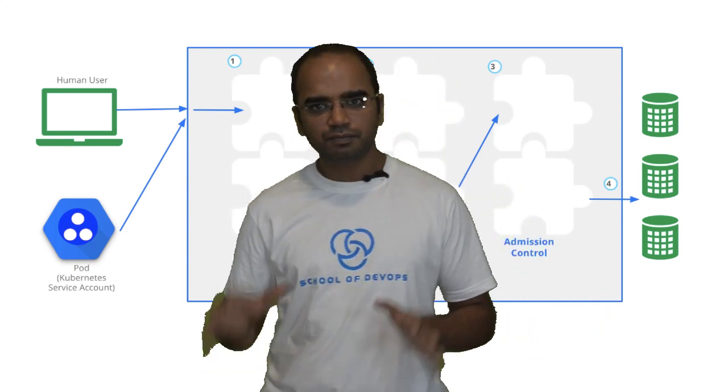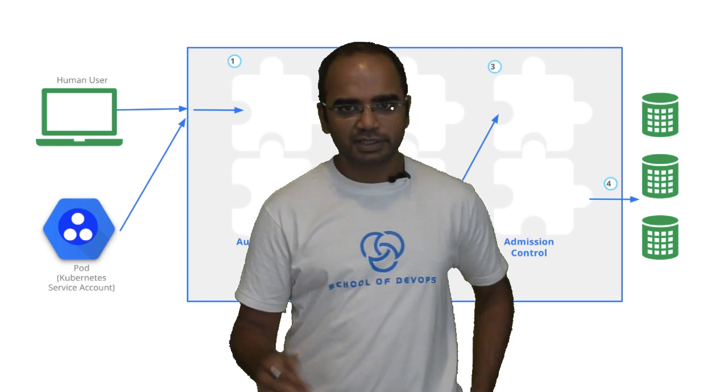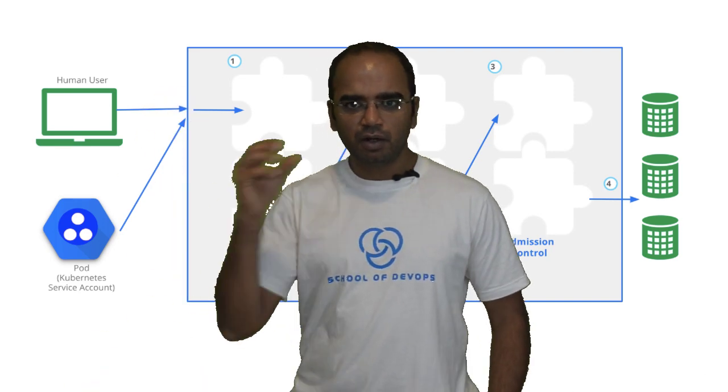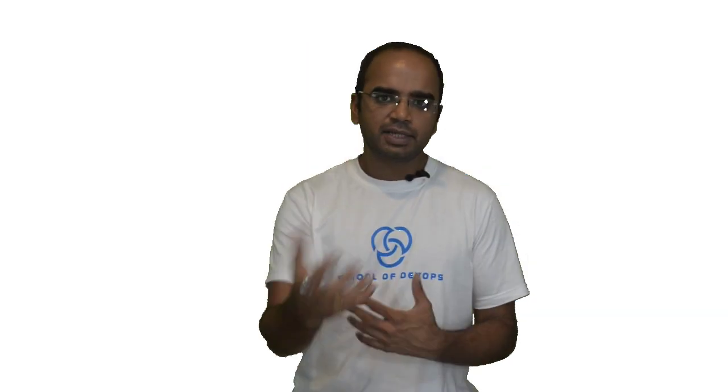That covers the three stages of access control in Kubernetes: authentication, authorization, and admission control. I hope the analogy makes things clearer. There is separate content on each of these topics including authentication, authorization, and admission control.